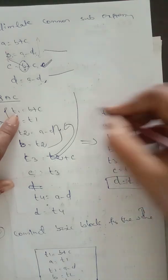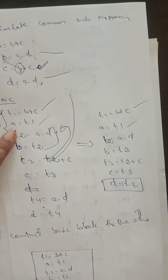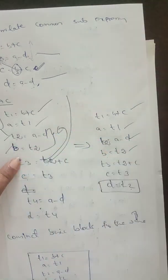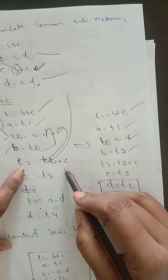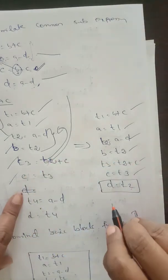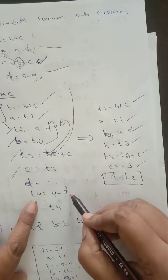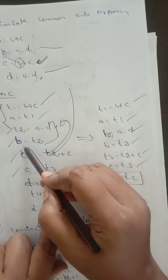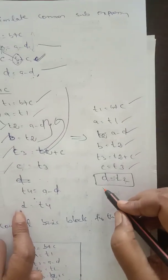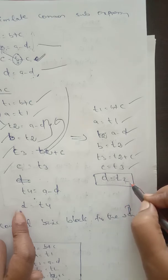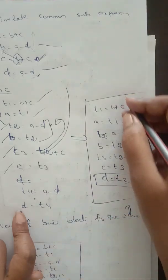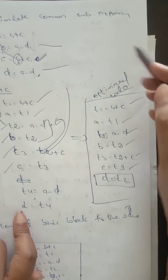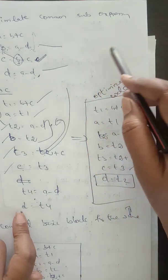The final optimized code is: t1 equal to b plus c; a equal to t1; t2 equal to a minus d; b equal to t2; t3 equal to t2 plus c; c equal to t3; and d equal to t2. Instead of writing t4 equal to a minus d again, we use t2. This entire set of codes is called optimized code using common sub-expression elimination.